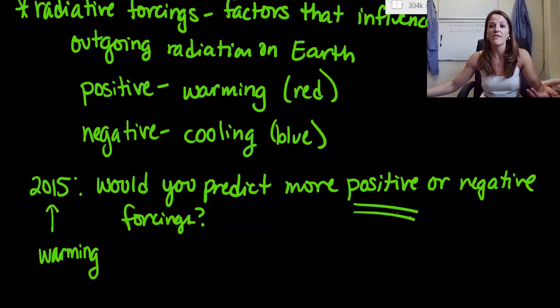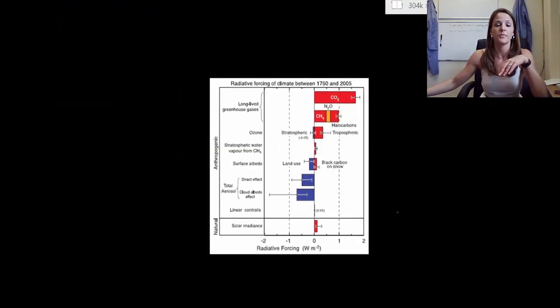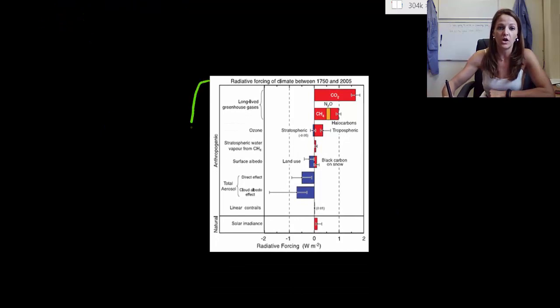So let's look at a graph that shows all of our major forcings and a comparison of one to another. So let's look at this first top section. So all the way up here, all of these are considered human influences. Where the one very only one at the bottom would be our natural source or our natural forcings.